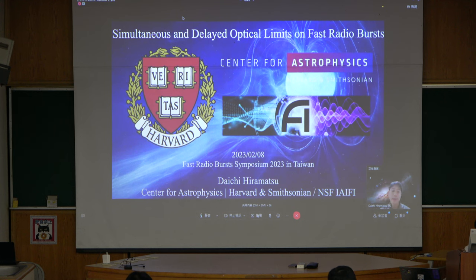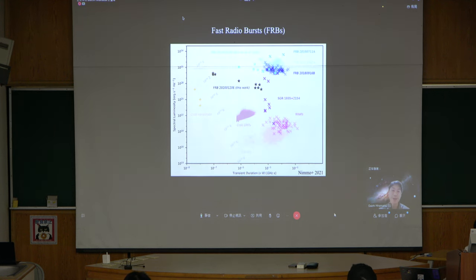Everyone in this room should know this plot. This is luminosity versus transient duration, and FRBs are in general really bright and they have short duration. The only reason I wanted to show this is that they span quite a few orders of magnitude in the luminosity space.